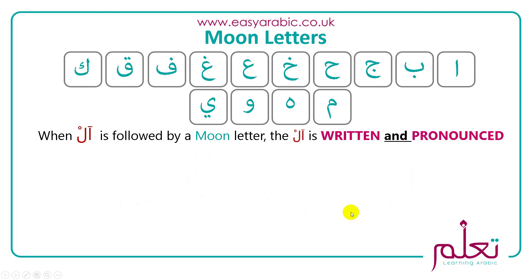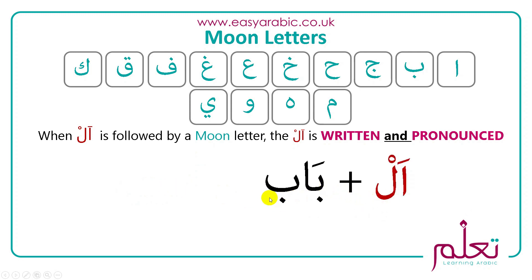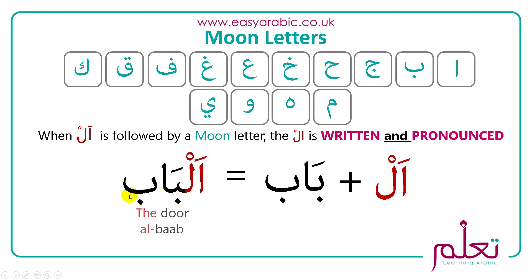Another example: al plus bab, which means 'the door.' Here the lam is written and it's also pronounced, giving al-babu. That's the only thing to remember — whenever you come across any one of these moon letters after the lam, the lam is pronounced.